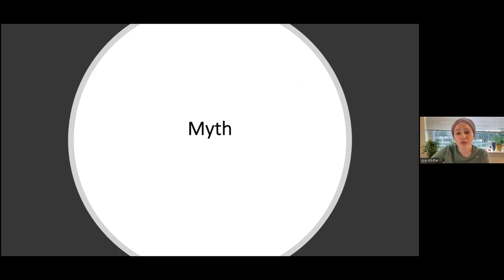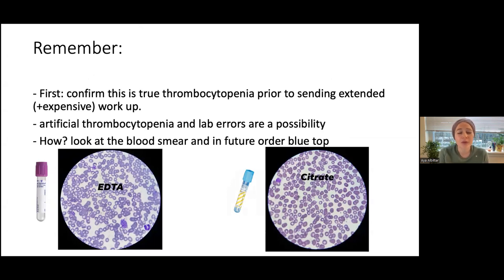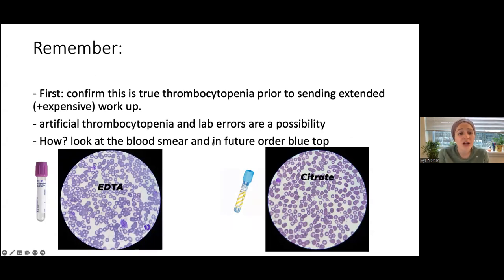Then why has his platelet dropped? When you have someone with a platelet count dropping suddenly and they're doing well clinically, not bleeding, you're not really thinking of something scary such as HIT or TTP right away. It should be in your mind somewhere as a not-miss diagnosis, but not the first thing. First, you want to confirm that this patient is actually having thrombocytopenia before you send more extensive or expensive workup such as your DIC or HIT panel.